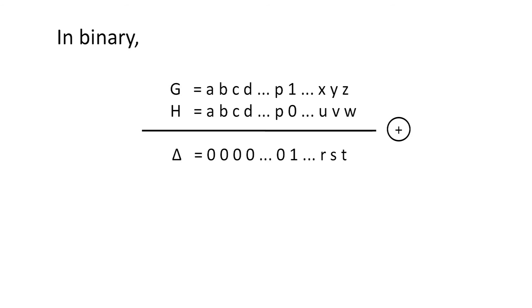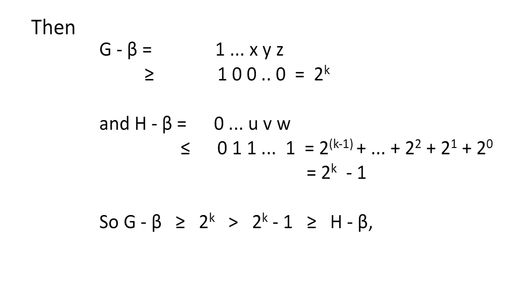Find the most significant ones bit in delta. G and H must agree in all leftmost columns whose sum we'll call beta. Then the leading ones bit in G minus beta is in the same column as the leading ones bit of delta. Call that binary place the 2 to the kth place. Then G minus beta exceeds 2 to the k, but H minus beta is at most the sum of smaller powers of 2, which cannot exceed 2 to the k minus 1. So G minus beta is greater than or equal to 2 to the k, which exceeds H minus beta. So G must exceed H.